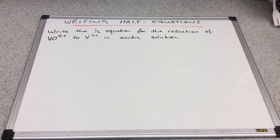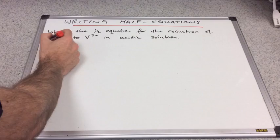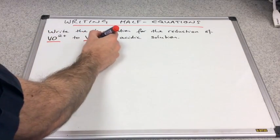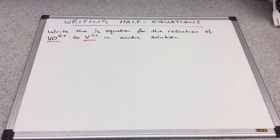So we've got some information on the board here. Write the half equation for the reduction, so it's the reduction process, of the VO2 plus ion to V3 plus. And this is carried out in acidic solution. Now the important thing to mention is that you will always be told what the reactant is and what your product is. And all you have to do is turn that into a half equation.